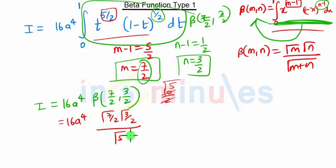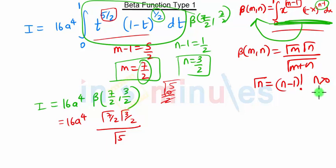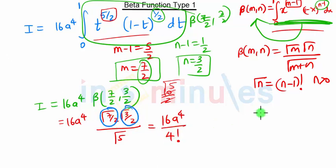For Gamma of 5, we are going to use the formula: Gamma of n is nothing but n minus 1 factorial, provided n is greater than 0 and n is an integer. So Gamma of 5 will be 4 factorial. For Gamma of 7/2 and Gamma of 3/2, we are going to use the formula: Gamma of n is nothing but n minus 1 into Gamma of n minus 1.